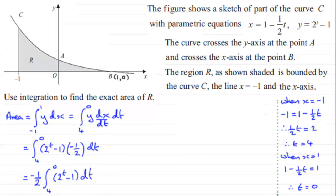Okay, so we've set that up. Now it's just a case of integrating this. So let's carry on down here. We've got therefore the area equals, we got our constant minus half out the front. Now what is the integral of two to the power t, a constant to the power t?